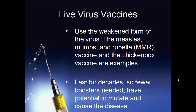The pros of live virus vaccines are that they tend to last for decades, meaning you don't need as many boosters — less boosters, less shots. The downside is that because you are getting a live virus, if it hasn't been weakened enough, it can mutate to the point where you actually get the disease you're trying to be vaccinated from. However, this is a very rare occurrence, so it's a small con compared to the strength and longevity of these vaccines.